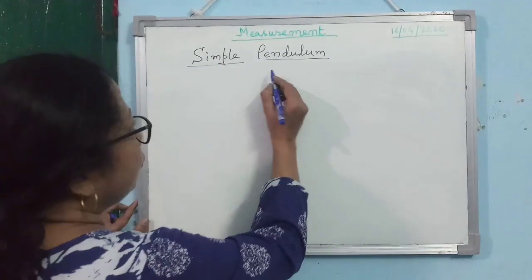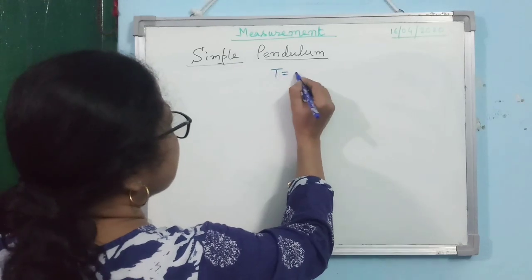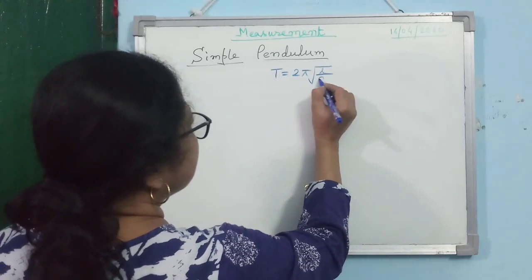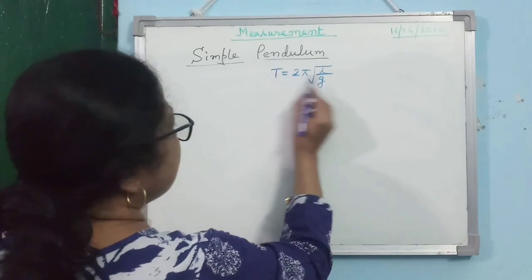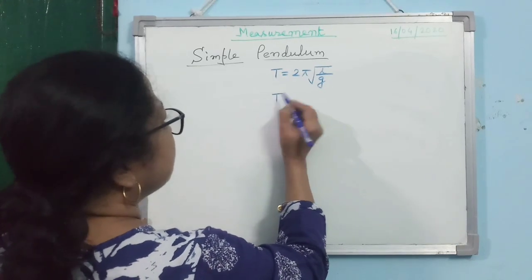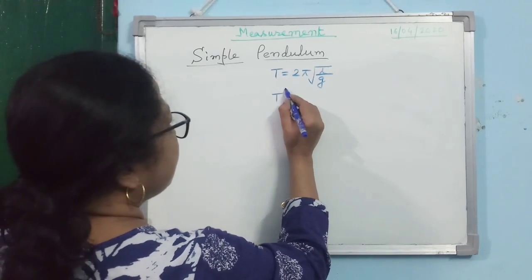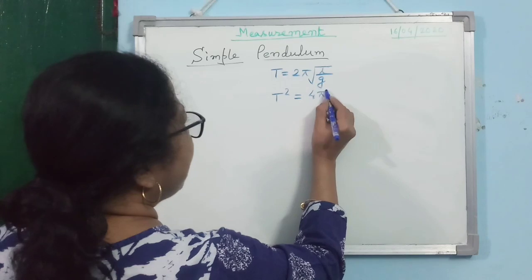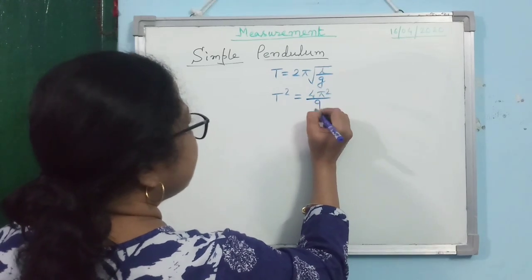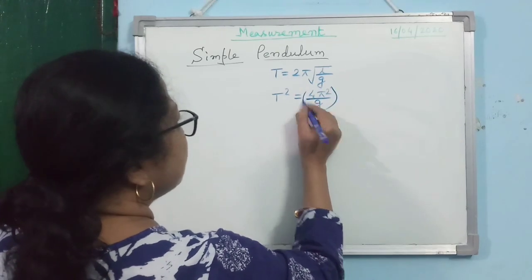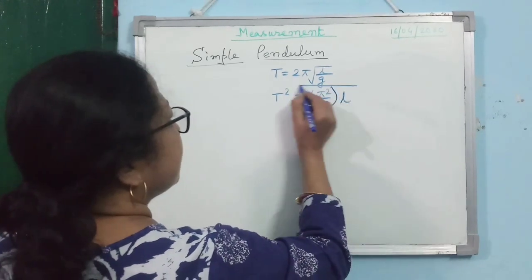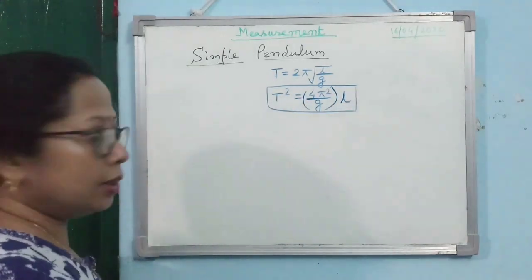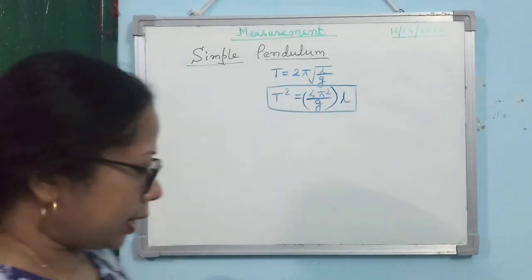We know time period is T = 2π√(L/g). If you square both sides, you get T² = (4π²/g) × L. This is an important relation to remember, and it is important for the next discussion.